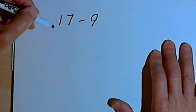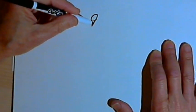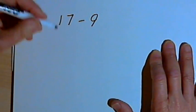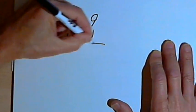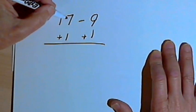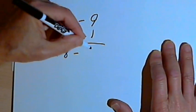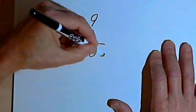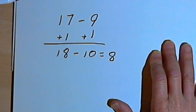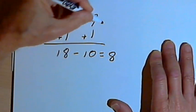Now at some point you may have realized that if you just added a 1 to each of these numbers, your problem would be a whole lot easier. So I'm gonna add a 1 to both numbers. We add a 1 to the 17, we get 18. We add a 1 to the 9, we get 10. And then 18 minus 10 is just 8, which is the same thing I would get if I took 17 and subtracted 9.